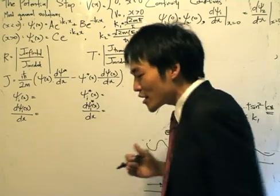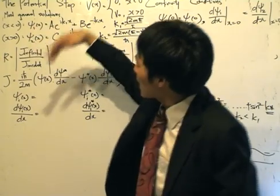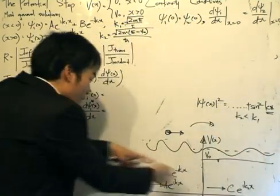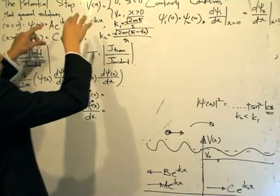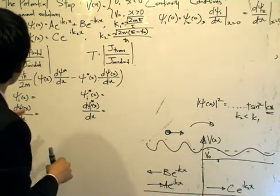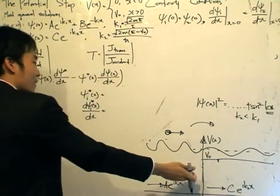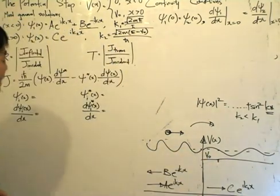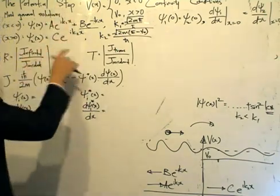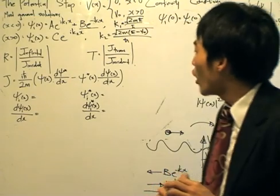Moving on to the reflection and transmission coefficients: the reflection coefficient R is defined as J reflected divided by J incident — the reflected current density divided by the incident current density. This corresponds to the individual plane waves as they approach the potential step. J reflected corresponds to the reflected plane wave b e to the minus ik1x, e to the ik2x corresponds to J transmission, and A e to the ik1x corresponds to J incident. I will calculate one of them, going through all the steps to beef up the rigor of our analysis.